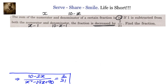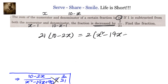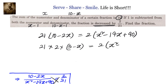To solve this, we do cross multiplication. We get 21(10 minus 2x) equals 2(x² minus 19x plus 90). On the left side, we can factor out 2: 21 times 2(5 minus x) equals 2(x² minus 19x plus 90). Cancelling 2 from both sides gives 21(5 minus x) equals x² minus 19x plus 90, which is 105 minus 21x equals x² minus 19x plus 90.